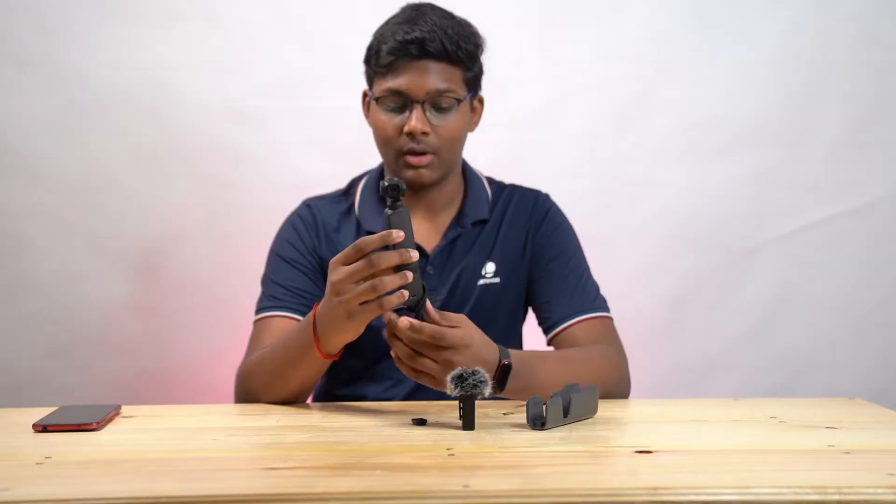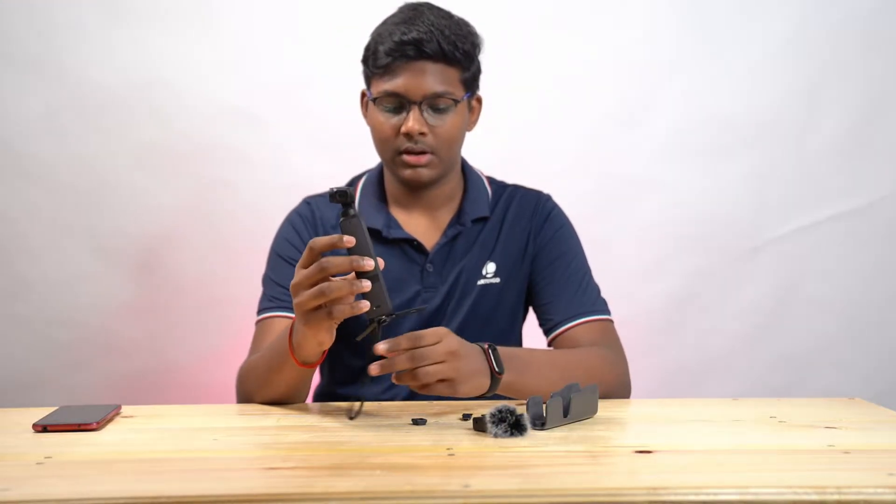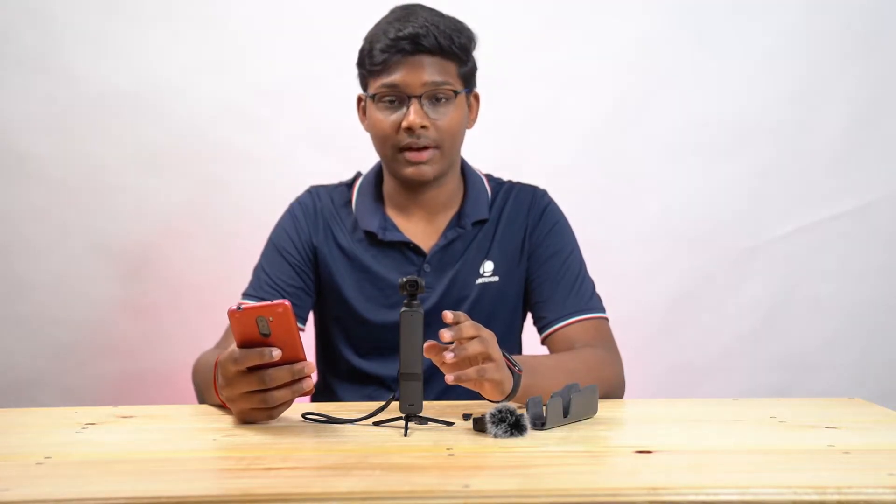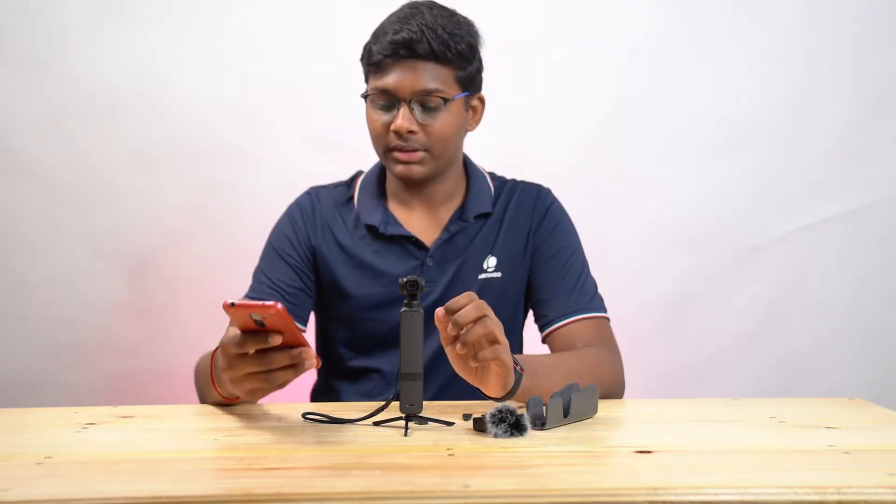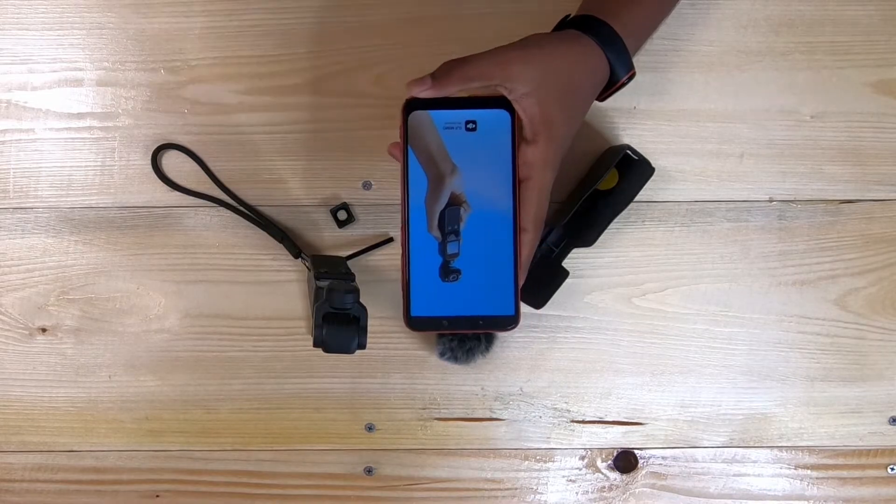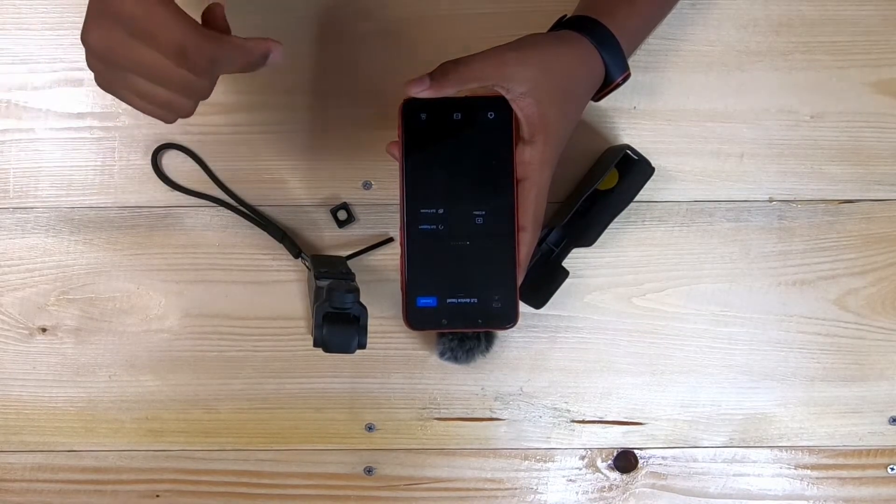And after that, now let's connect it to the app. So to connect the DJI Pocket 2 to the mobile, you will be needing to install the DJI Memo app, which I have already installed in my mobile device. So after you open the device, and then you go to DJI Memo app.